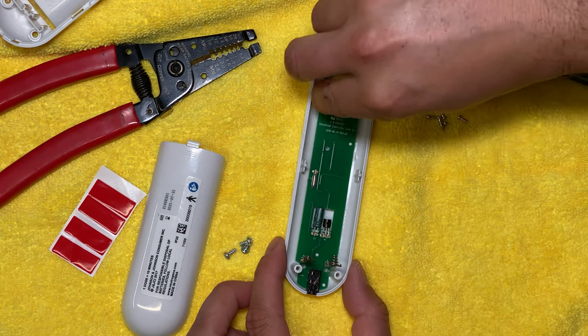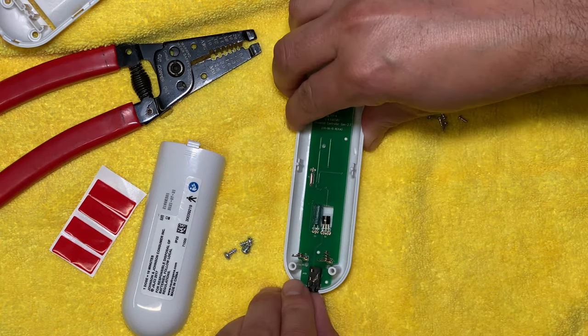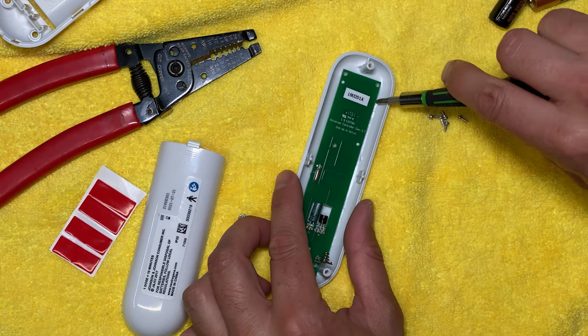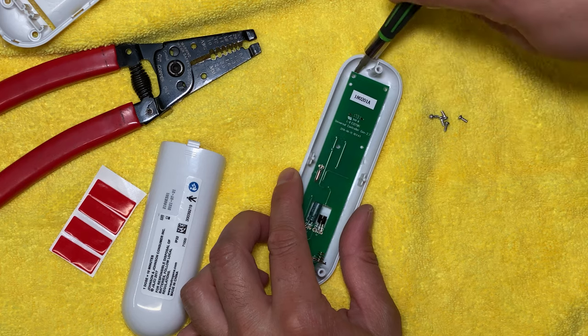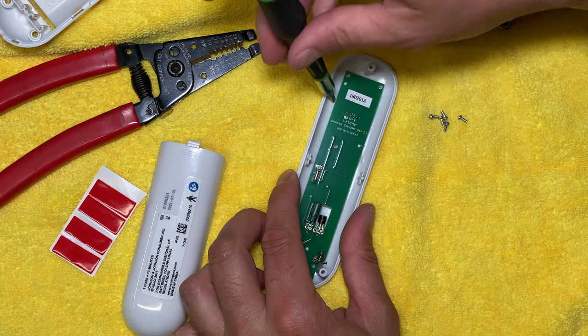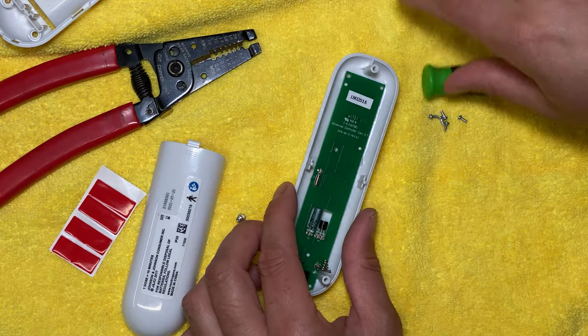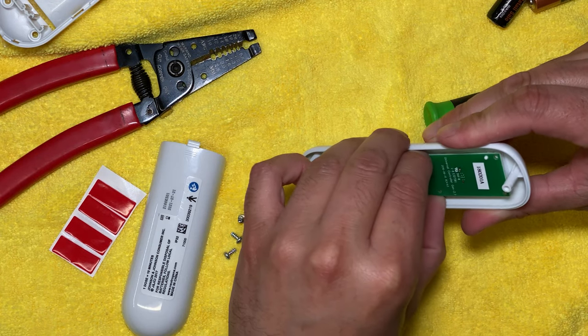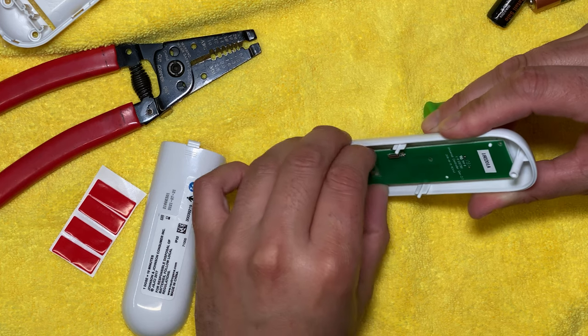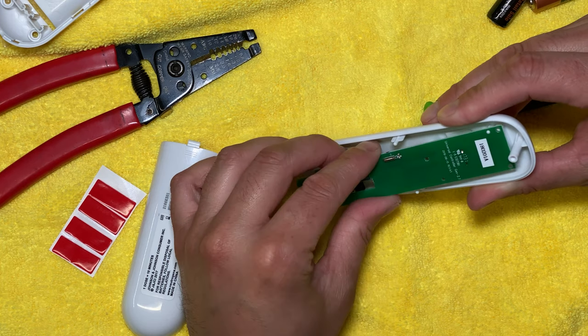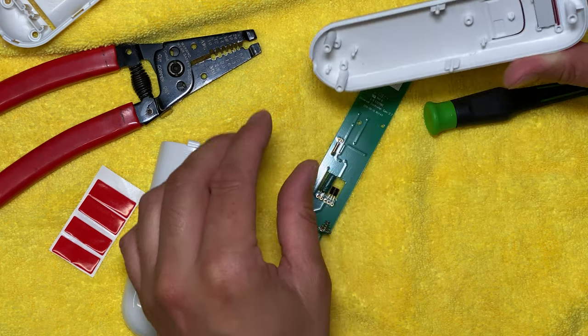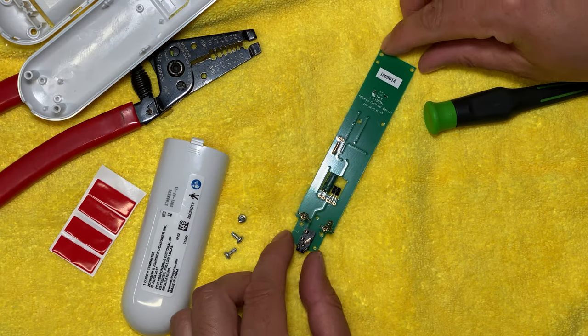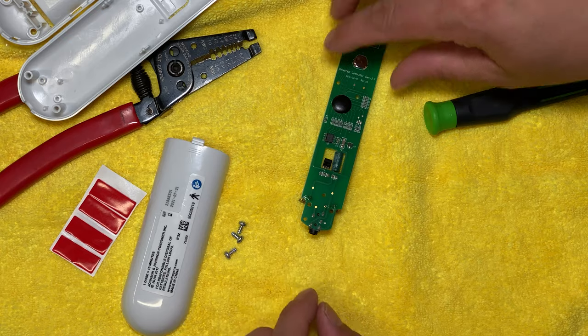Okay, all screws are removed. We're going to lightly pry this out. It did like to stick on one of those little white plastic knobs there, so go gentle. You don't want to crack the circuit board. Okay, circuit board removed. We need to flip it over and then flip it the other direction.